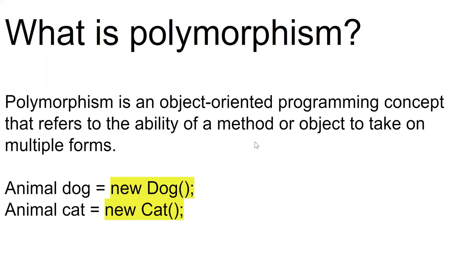Yes, I can tell you what is polymorphism. Polymorphism is an object-oriented programming concept that refers to the ability of a method or object to take on multiple forms. Let's have a look at the example in the video. You can see animal dog equal to new dog and animal cat equal to new cat. The animal can be referred as a dog or animal can be referred as cat. This is known as polymorphism in any programming language.